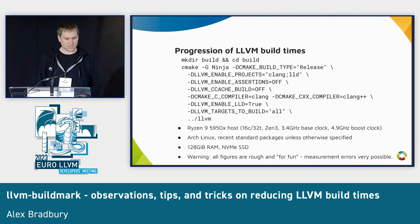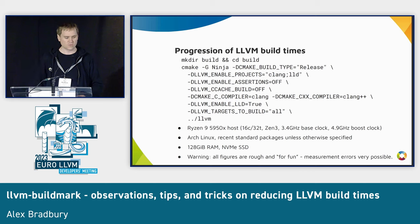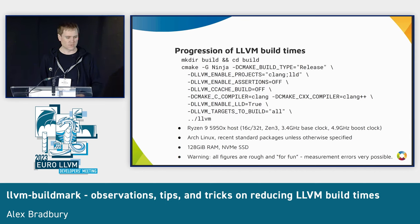I've got a few stats here — kind of a health warning — they're all rough and for fun. I can't guarantee they're all completely reproducible, but I think they're broadly correct. This is building on a relatively beefy desktop system: Ryzen 9 5950X, 16 cores. I've included full build commands more for future reference.